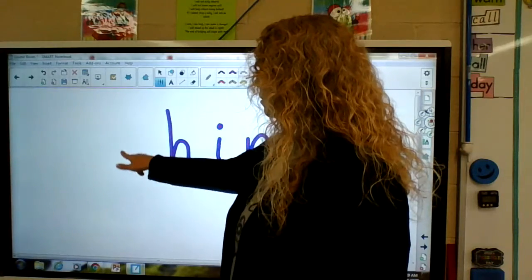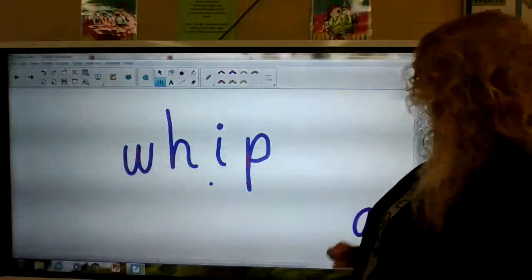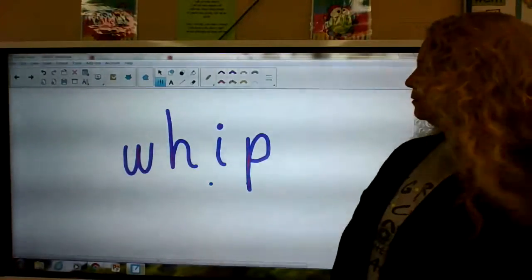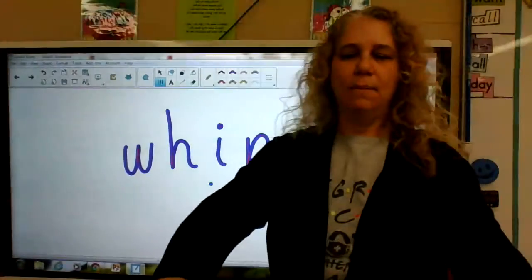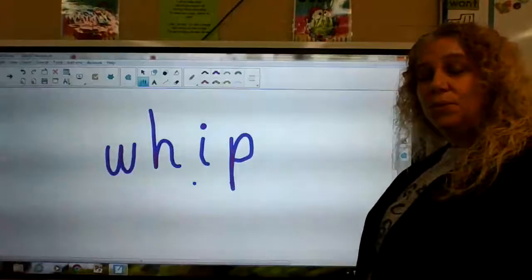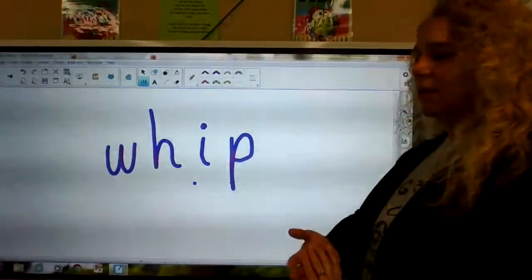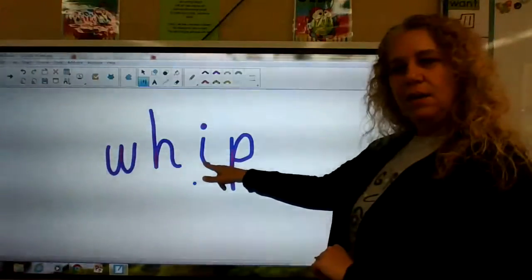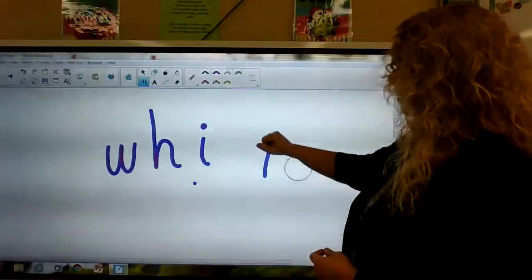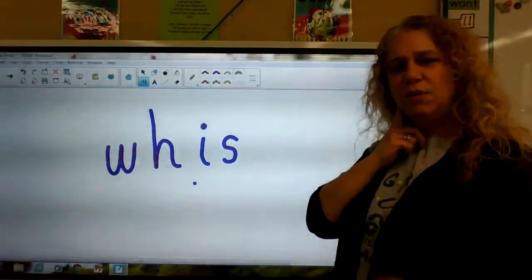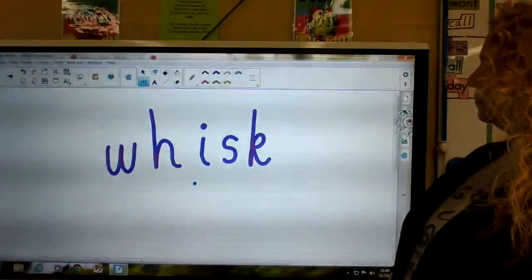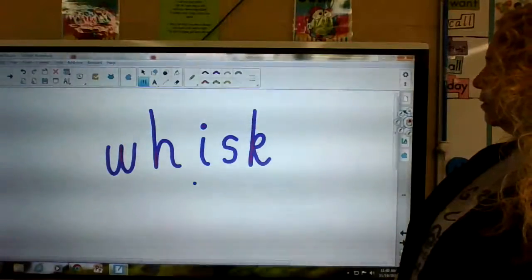All right, let's change that ch to a wh now. Wh i p. Sometimes you have to whip the eggs. Another baking term. You'd think I was a baker, but I'm not. Whip. And let's do whisk because we talked about that one yesterday, and that's why I talked about baking too. Wh i, and we have to change this to a s k. S k. We know s then k. Could be two things, right? It's k. Whisk. Whisk.